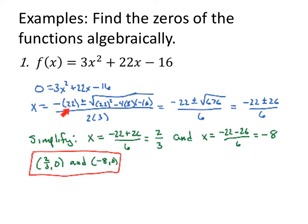The quadratic formula negative b, so negative 22, plus or minus the square root of the entirety, the discriminant 22 squared minus 4 times 3 times negative 16. That's b squared minus 4ac. All over 2 times 3 and that's 2 times a. I simplify the radicand first, 676.